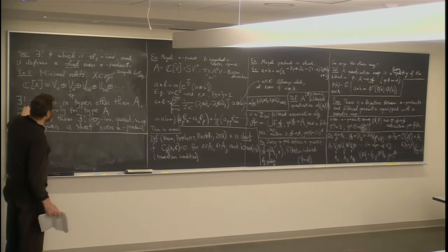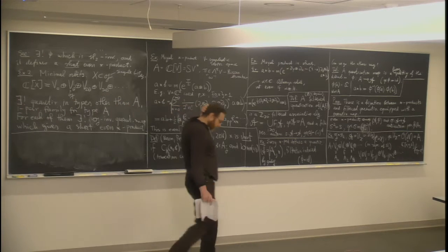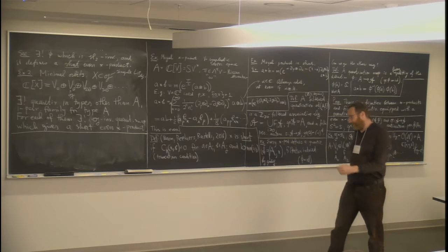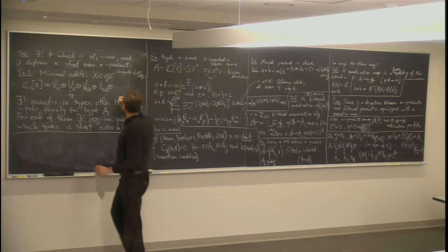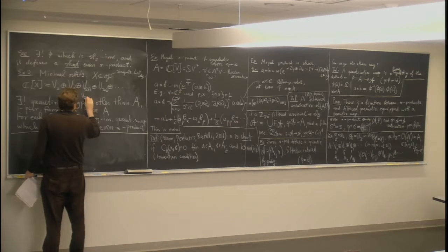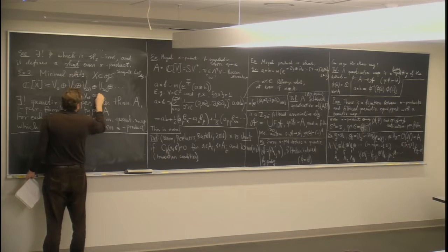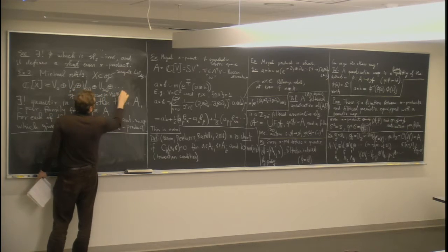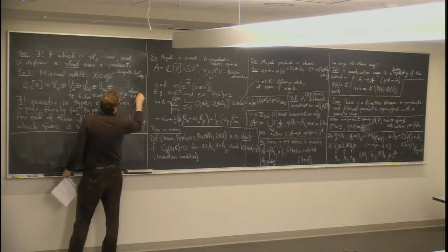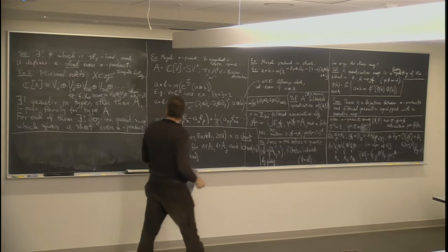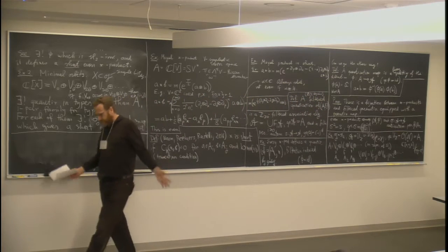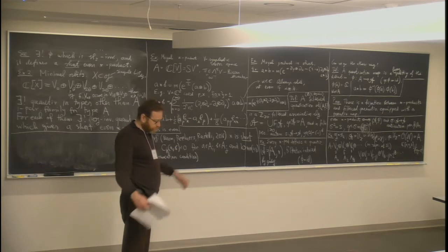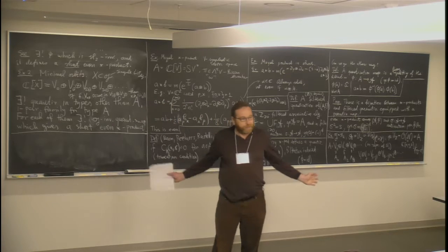These cases are easy because of the multiplicity-free decompositions. But in general it is not obvious why short star products exist. If we take another algebra — say the full nilpotent cone instead of the minimal orbit — it's not clear. There are many G-invariant star products, and other representations occur. The Clebsch-Gordan property still holds: if V_kθ occurs in V_iθ ⊗ V_jθ, then k ≥ |i−j|. But in general other representations also enter. A random quantization, for example the Campbell-Hausdorff quantization, will not satisfy the shortness property.